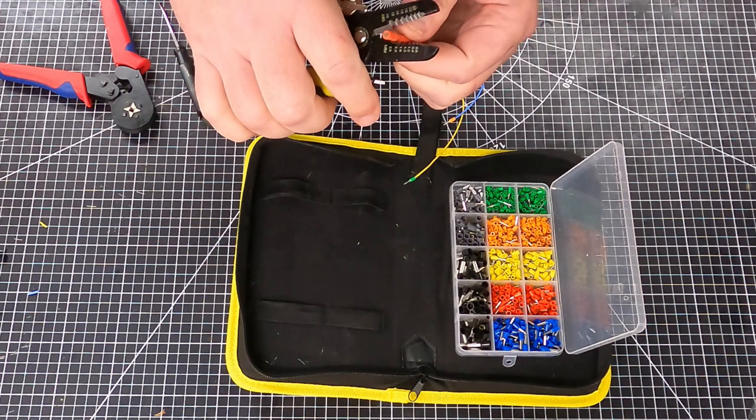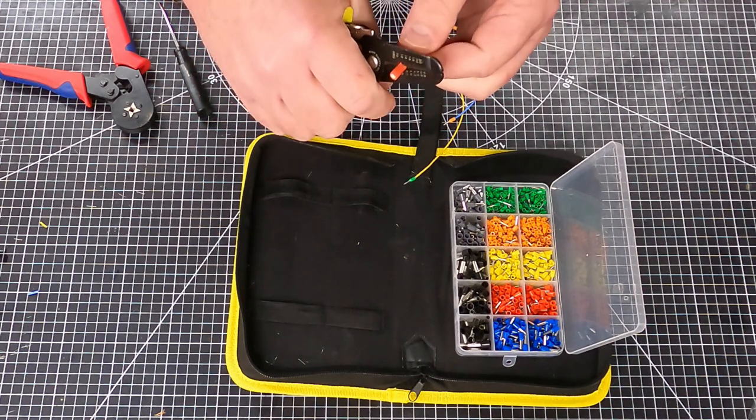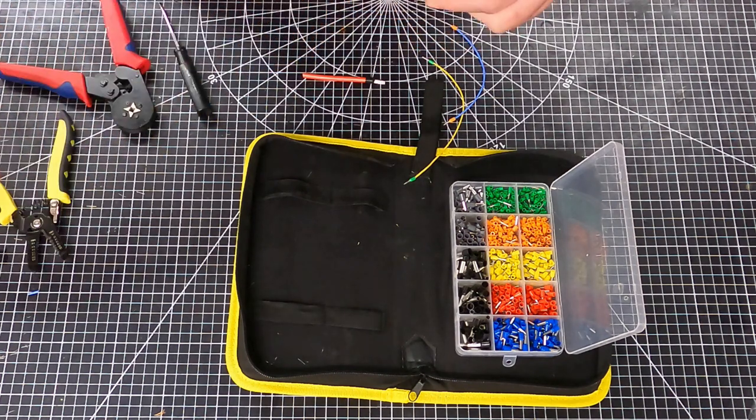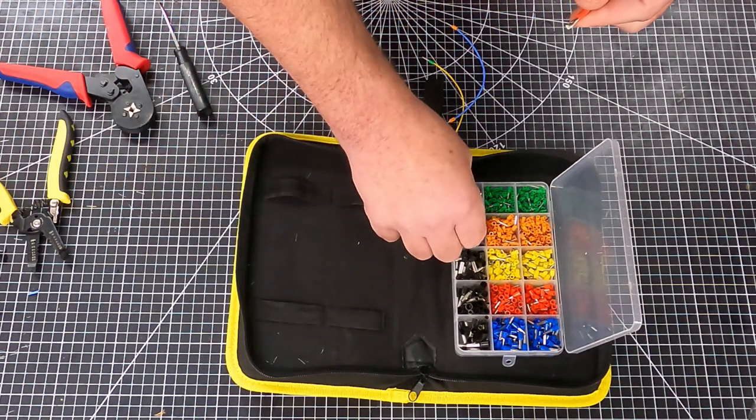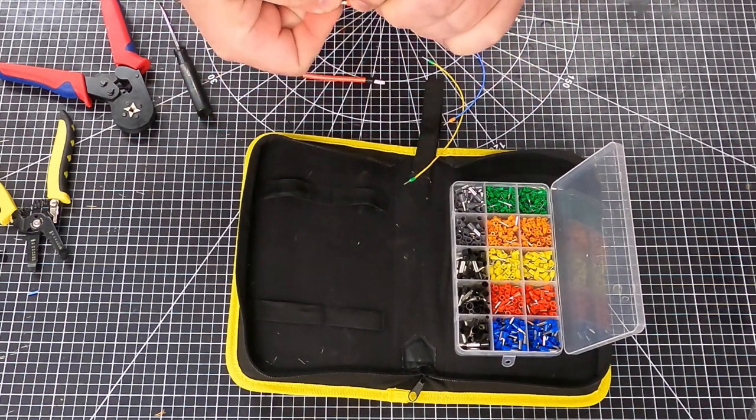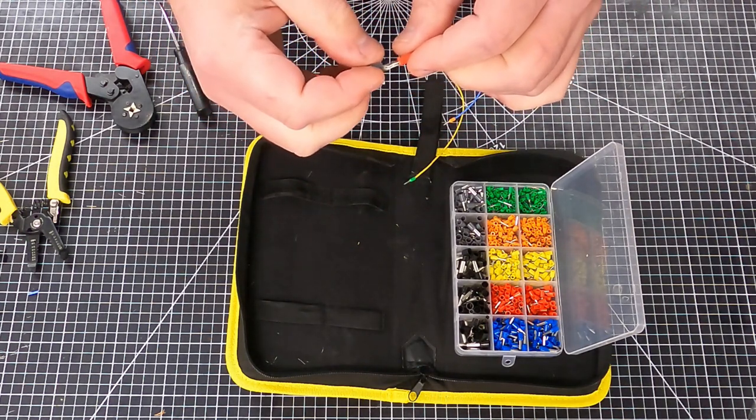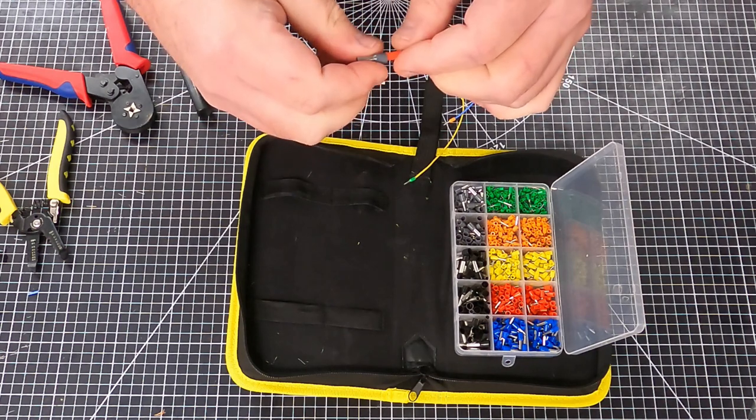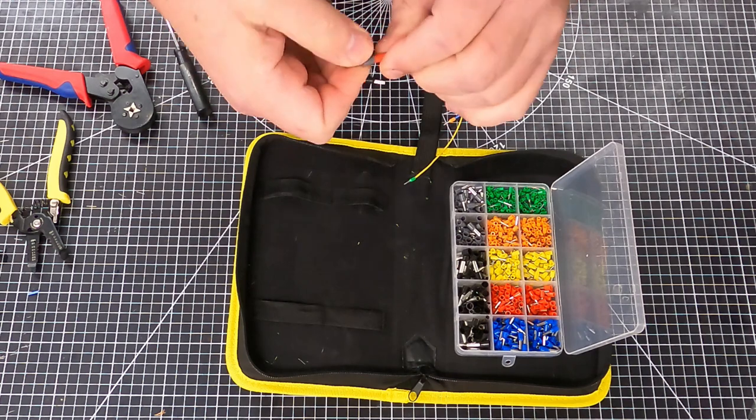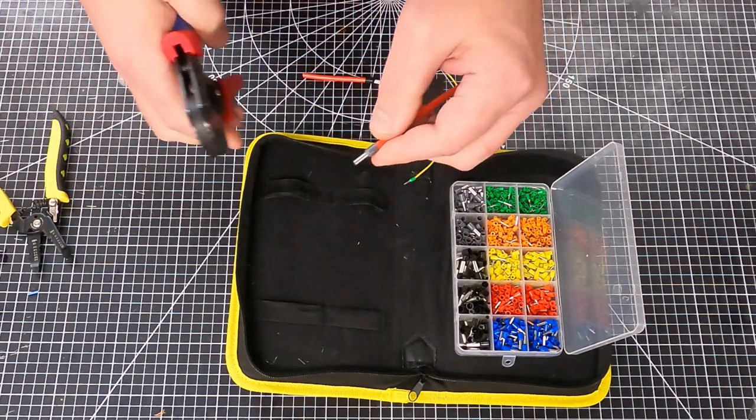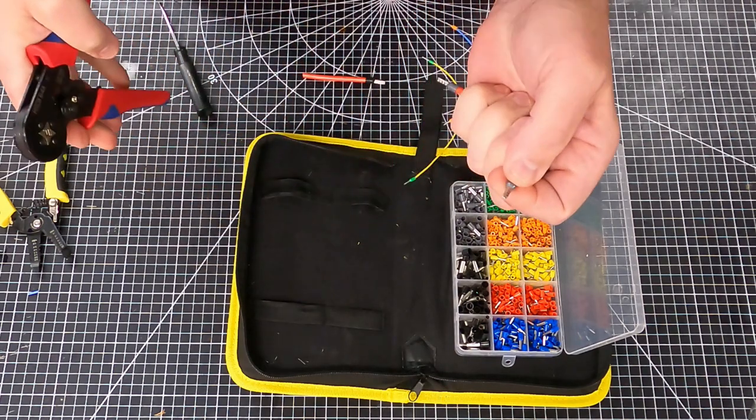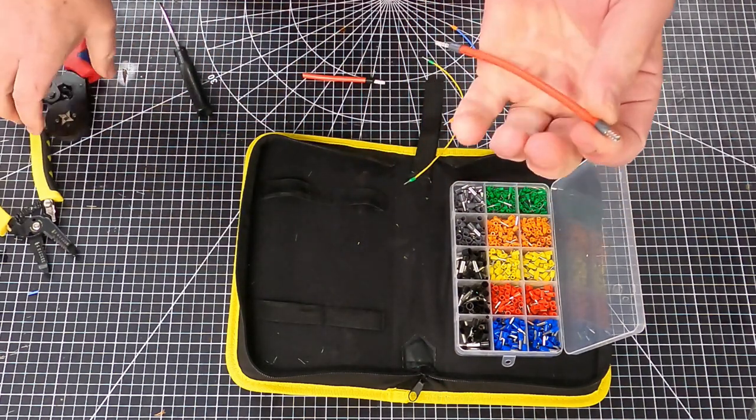This one here is a 12 gauge. Again, another nice crimp on there.